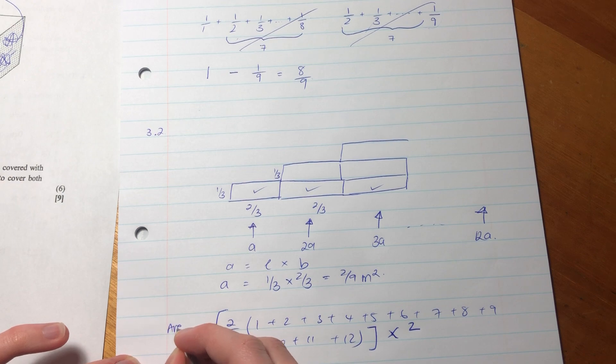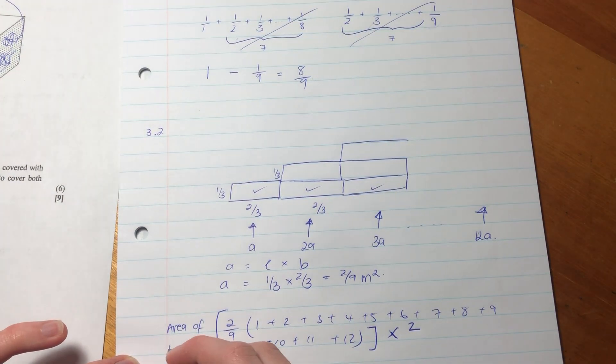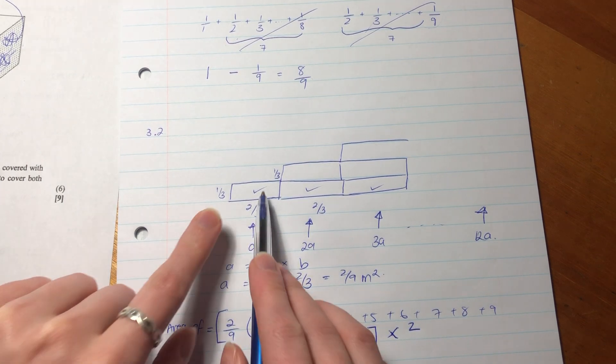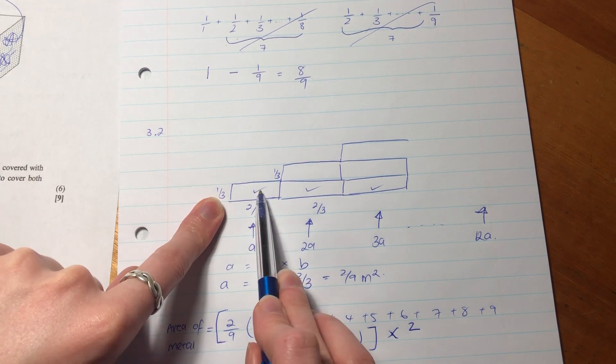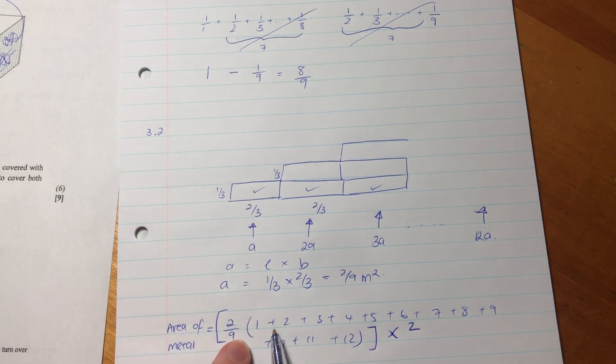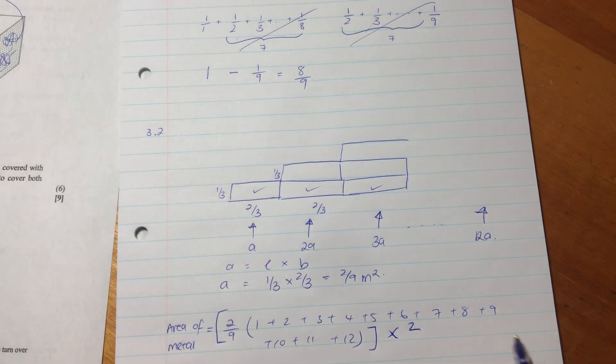So this is the area of the metal sheeting. We've worked out the area of one block, then noted that for one side, the area increases with each step. Then we multiply by 2 to account for both sides of the pavilion.